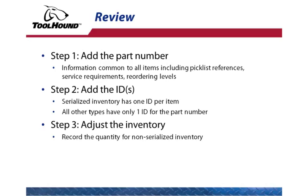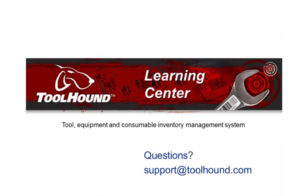Let's review. Step one is add the part number — this is where you enter information common to all items, including pick list references, service requirements, and reordering levels. For non-serialized inventory, this also includes the primary ID. Step two: add the IDs. For serialized inventory, there is one ID per item; other inventory types have one primary ID set at the part number level. Step three is adjust the inventory, which applies to non-serialized inventory only. Thanks for watching this video from the ToolHound Learning Center.